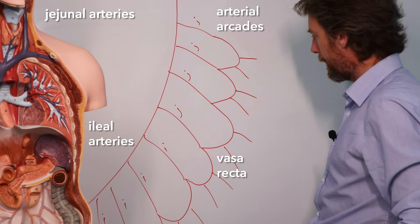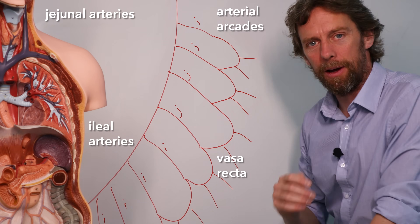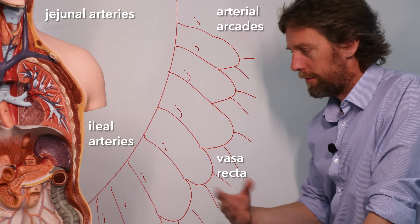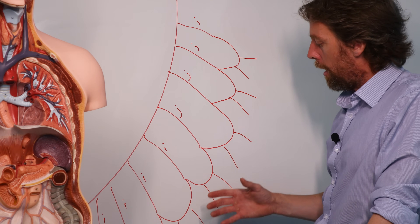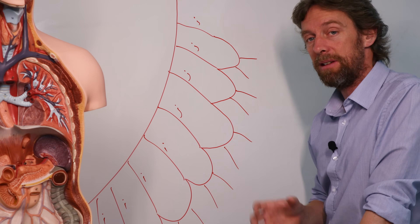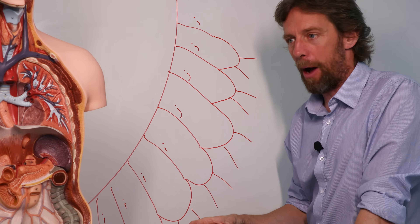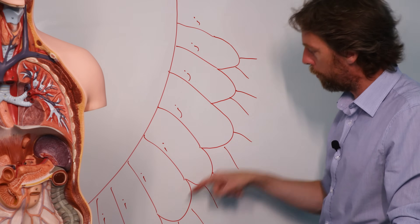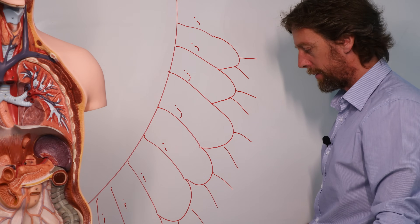From the arterial arcades we see straight arteries called the vasa recta — literally 'straight blood vessel.' This means that over millions of years of evolution, a lot of redundancy has been built into the GI tract blood supply. This is really important because if an artery gets occluded and you get ischemia to a region of the bowel, it can be fatal. The redundancy that has evolved into the blood supply to the small intestine limits that risk.